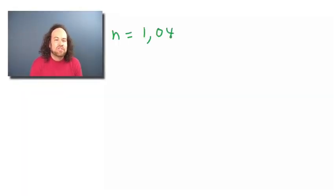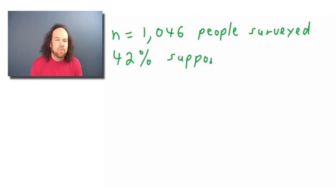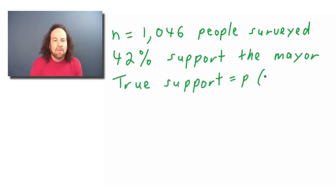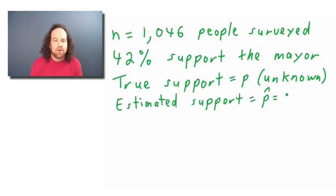You might want to draw conclusions from that — for example, that less than half of the people support the mayor. The question is, would that be a fair thing to conclude? To consider that, let's remember that the number of people surveyed was n equals 1,046, and 42% said yes they support the mayor. So the true support p is unknown, but the estimated support p-hat equals 0.42.